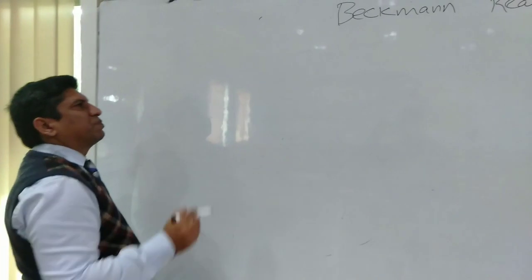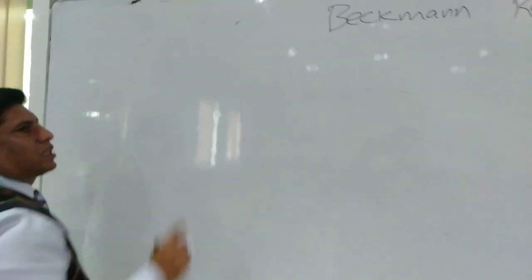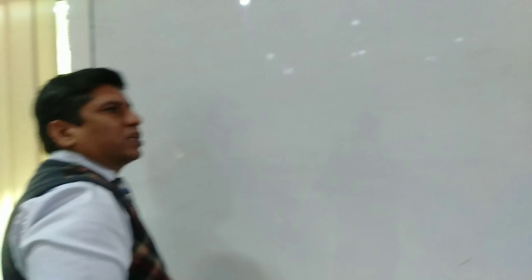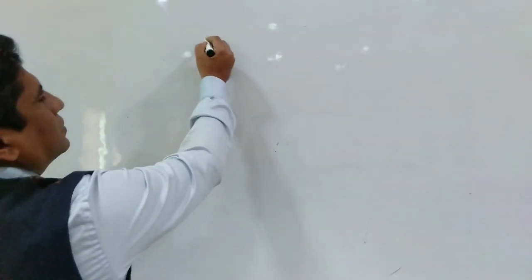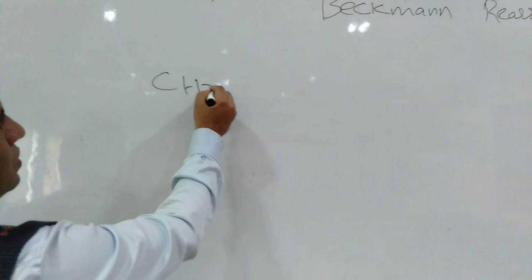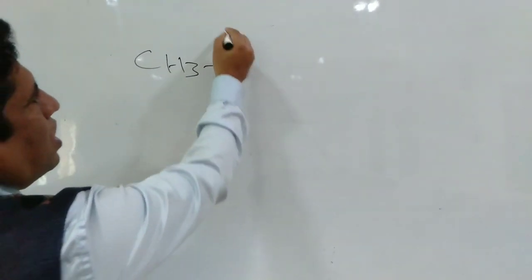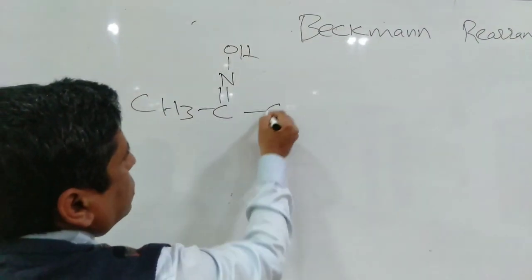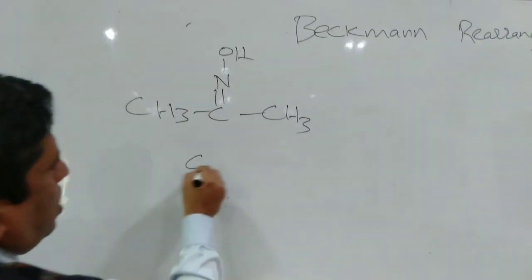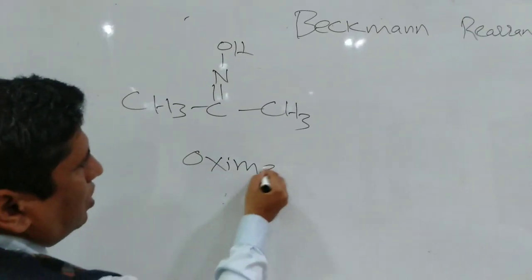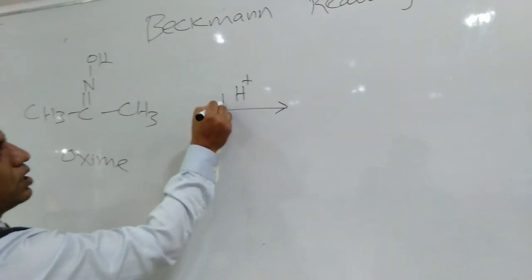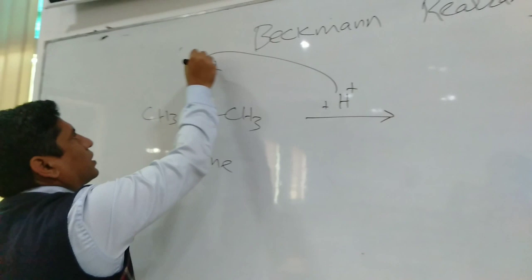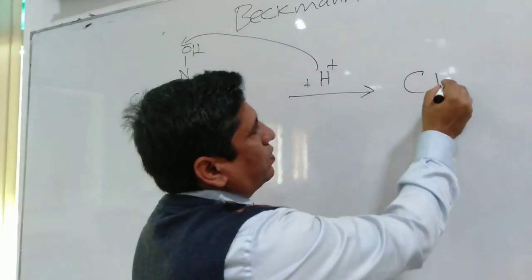Now the mechanism of Beckman rearrangement. As I told you before, it is an acid-catalyzed reaction, so the acidic proton will attack the hydroxyl group of the oxime. That will attack the hydroxyl group and a new product is formed.